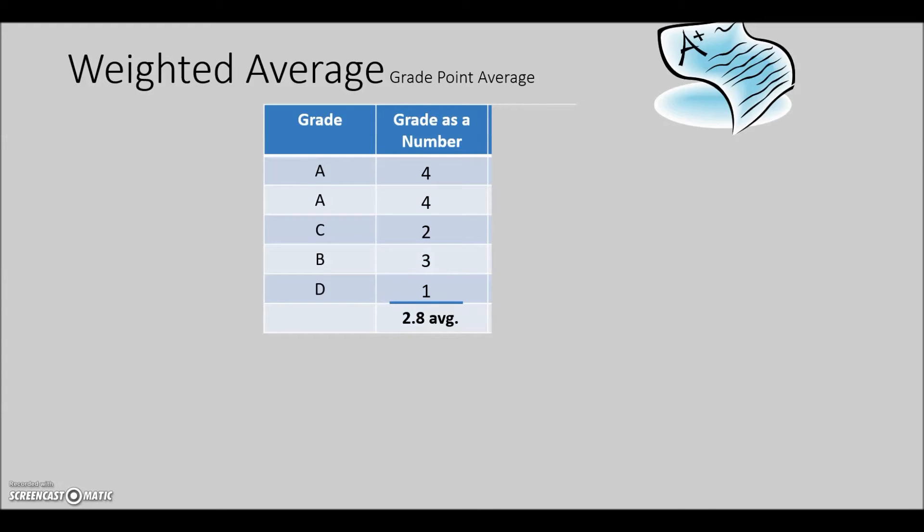However, the more common GPA is a weighted average where we need to know the number of credits taken. For some schools, especially college courses, each course has a number of credit hours. Credit hours are units schools use to measure the workload. We will want to record our point value for each grade and record the number of credits each course is worth.